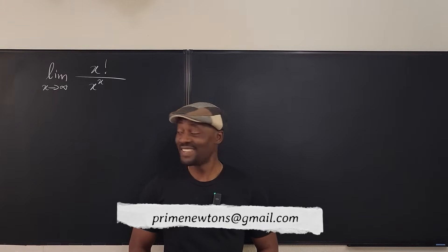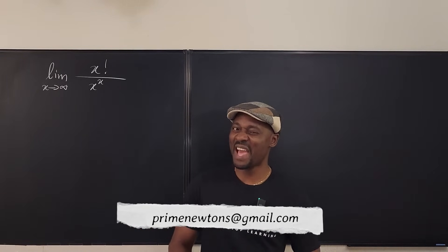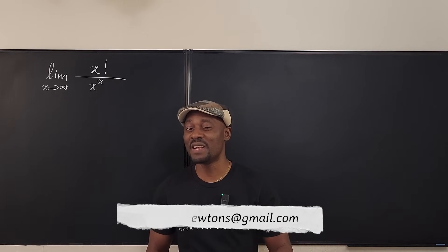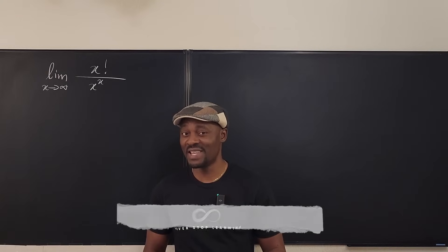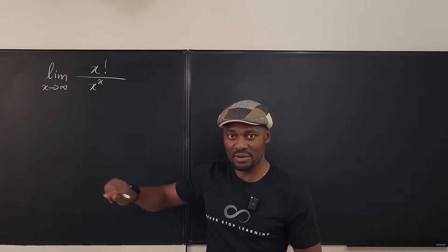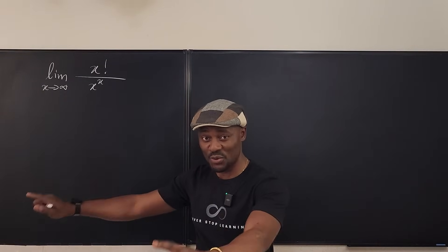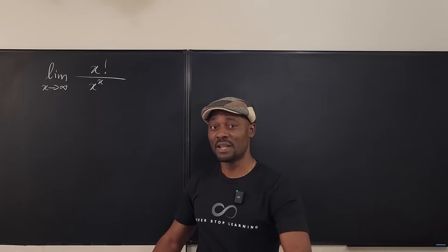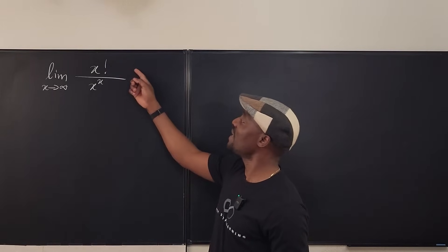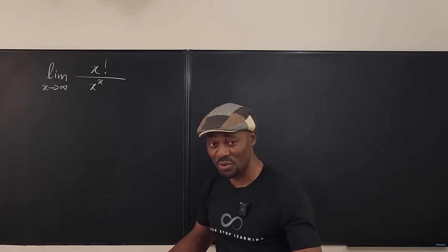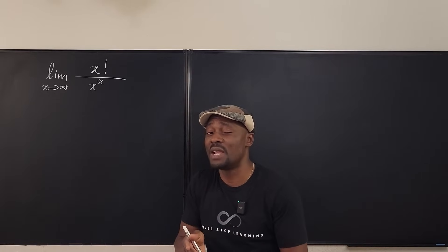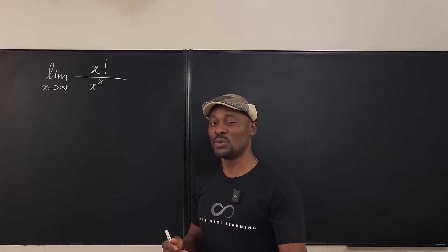Welcome to another video. Let's take a limit of x factorial over x to the x as x goes to infinity. Obviously, everything is getting bigger — the top is getting bigger, the bottom is getting bigger. Everything is driving toward infinity at a supersonic speed. And when we get to infinity, we're going to get infinity over infinity, which is an indeterminate form, which you cannot do anything with unless you can do some factoring or L'Hôpital's rule.